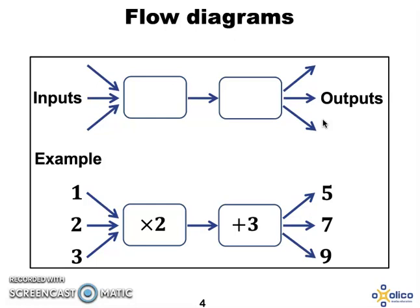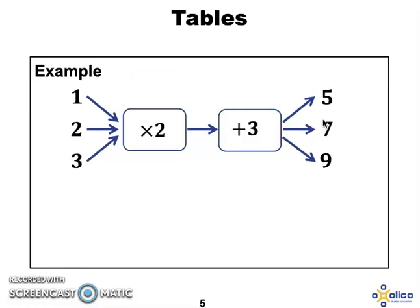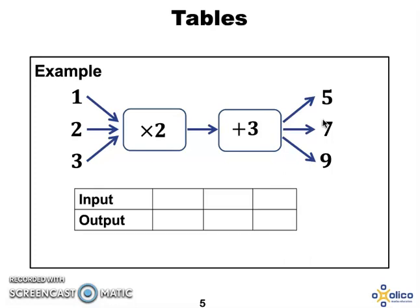We're going to use this flow diagram to help us with our other methods of representing. So when we have a look at a table, a table shows input and output and it shows the input and its corresponding output. So when we put 1 into the flow diagram, the output was 5. When we input 2, the output was 7. And when we input 3, the output was 9. So a table does not show the operators. It only shows input and output.